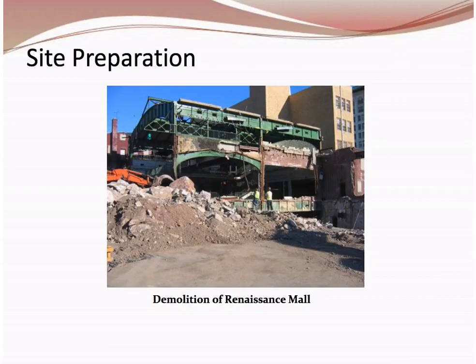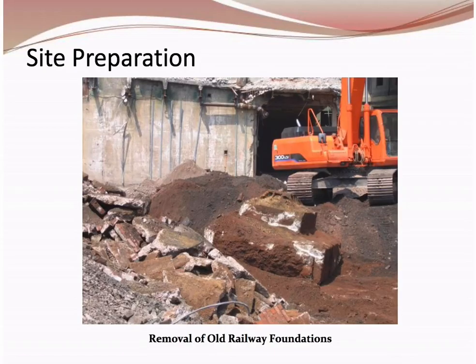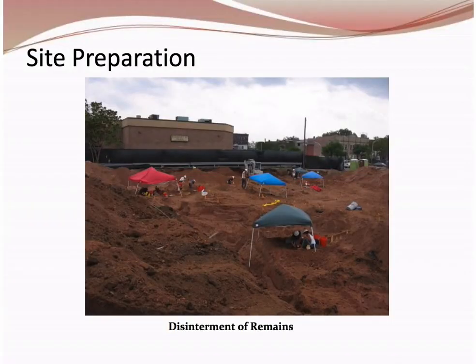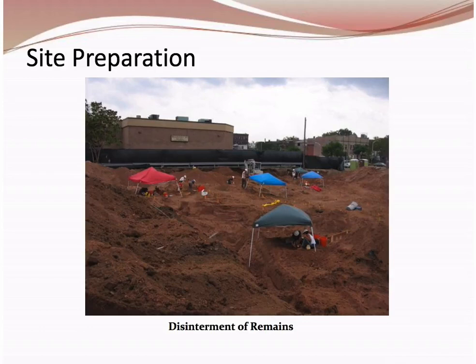Photos of site preparation show buildings being demolished around the perimeter, fill being removed in the foreground, and one of the old rail foundation elements that had to be taken out. A team of archaeologists worked for about a four-month period and removed approximately 2,300 to 2,400 sets of human remains dating back to the 1600s and 1700s. Among the unique findings were a couple of iron sarcophaguses later taken to the Smithsonian — an interesting aspect you don't see on a lot of geotechnical projects.